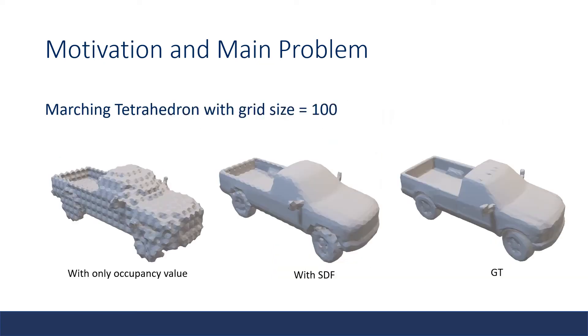To compare occupancy function with sign distance function, let's look at a quick example. Here we are running marching tetrahedron with a grid size of 100. If we only have occupancy value, which is the sign at each grid position, we have to place the surface at the center of each edge, and the resulting shape is very wavy.